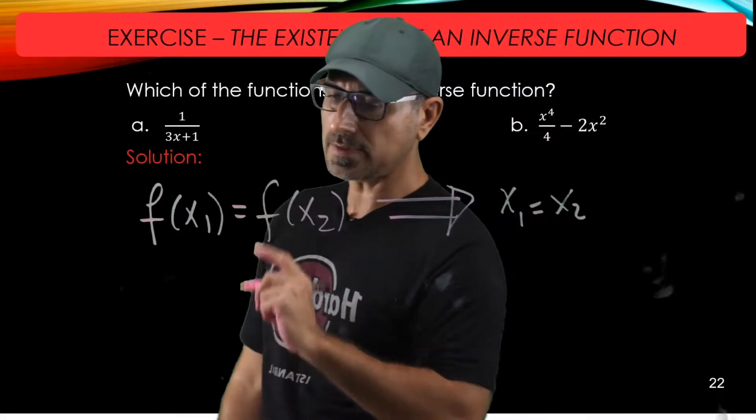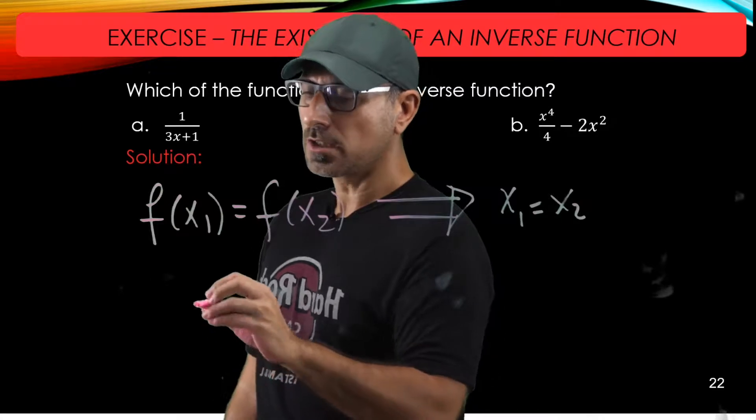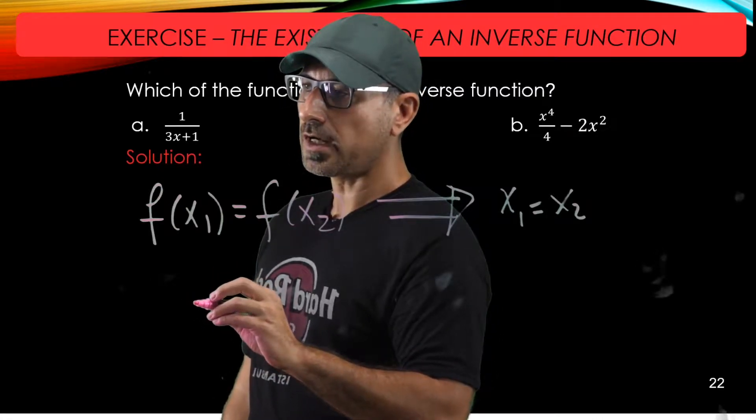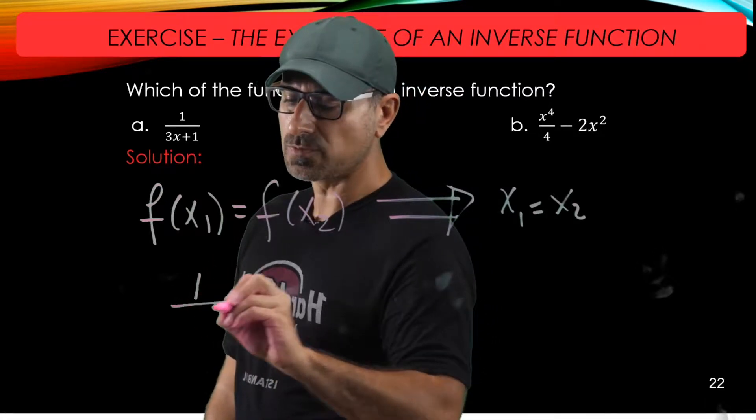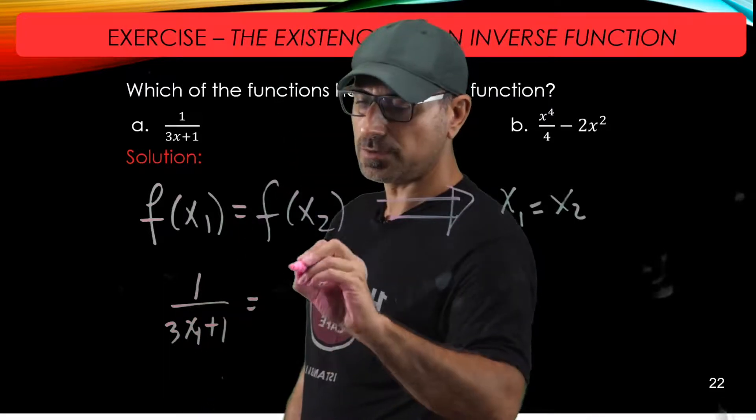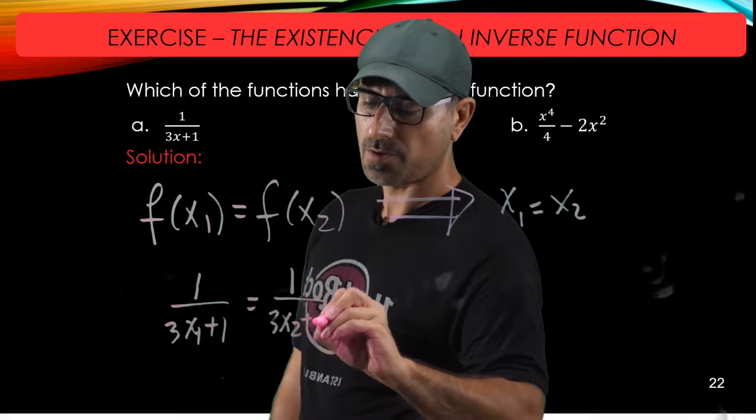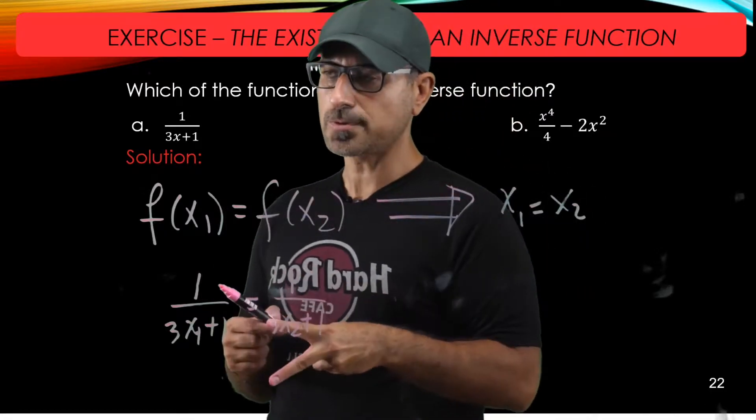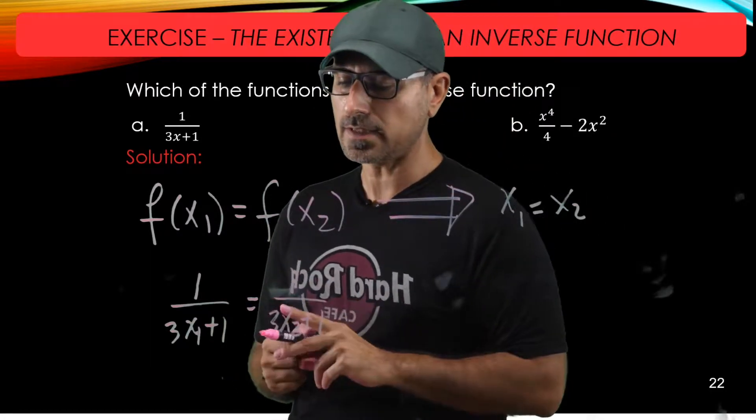So to set this equality, we're going to start with the function here. So we're looking at f of x1. So that is one over three x1 plus one. And f of x2 equals one over three x2 plus one. We have two rational expressions set equal.